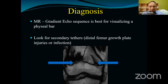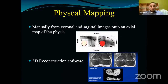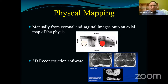For physial mapping, I superimpose grid lines on a picture of the physis and manually shade areas from the coronal and sagittal images. This gives me, as a surgeon, an idea of my approach to the bar, how much of it to resect, and how far I have to go. You also have fancy 3D reconstruction software - if you have access to them, it would be a good idea to make use of that. But I am still in manual mode with these.